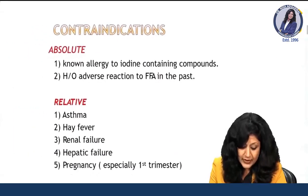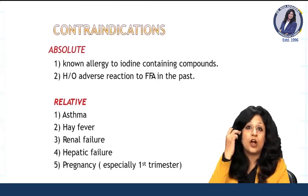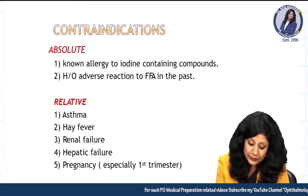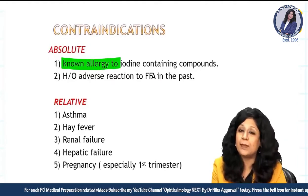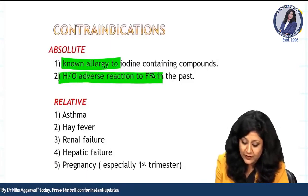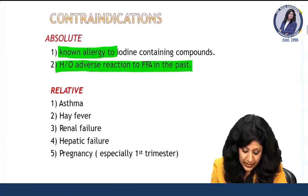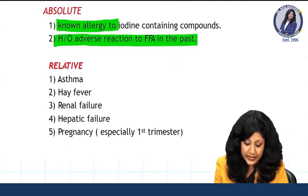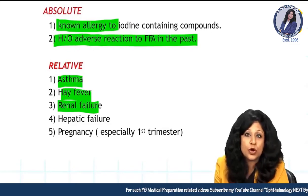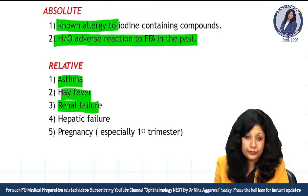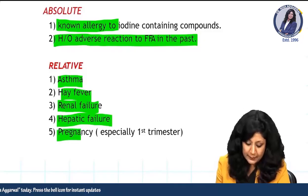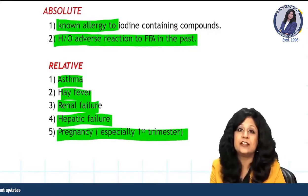Before doing any procedure you should know the contraindications. You should not do FFA if there is any known allergy to iodine-containing substances — because we are using an iodine-containing dye — or any history of adverse reaction in the past. Relative contraindications include history of asthma or hay fever, renal failure (the route of excretion of the dye), hepatic failure (where the dye gets metabolized), and pregnancy.